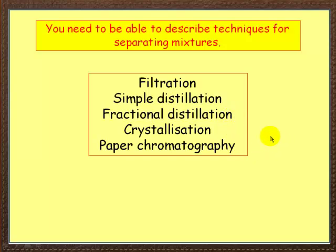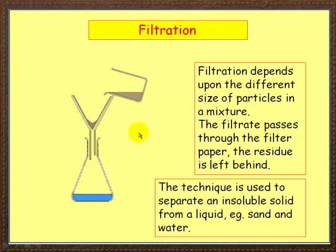Let's start first of all with the most simple, which is filtration. Here we've got a conical flask, a filter funnel, and in the filter funnel there we've got some filter paper. Now filtration depends on the different size of particles in a mixture. The filtrate passes through the filter paper, and the residue is left behind. This bit here is called the residue — it's left behind. This bit here is called the filtrate.